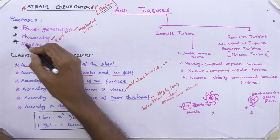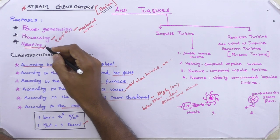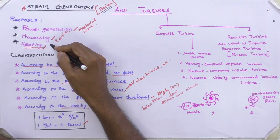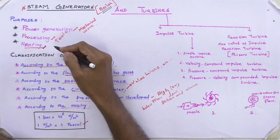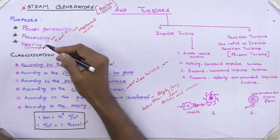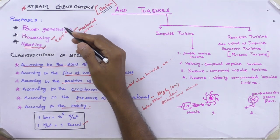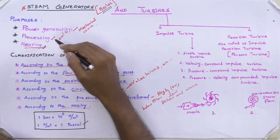The third use is heating. Steam is used for heating residential or industrial buildings in winter. It is also used to heat water for water supply.